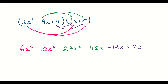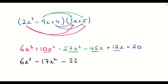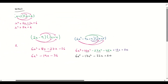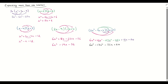We can simplify this down. We've only got one x³ term, so that stays as 6x³. For x² terms: 10 − 27 gives minus 17x². For x terms: minus 45 + 12 gives minus 33x. And plus 20 is our only constant. So the fully expanded and simplified answer is 6x³ − 17x² − 33x + 20. That's it for expanding algebraic expressions with more than one bracket.